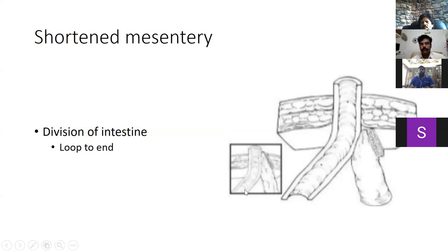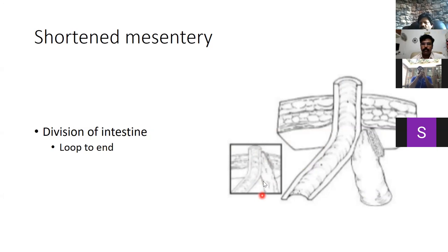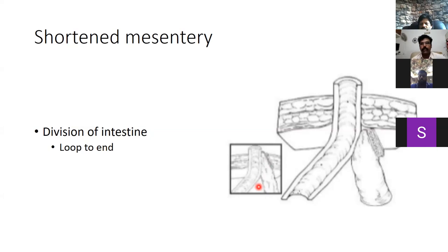If a loop was planned but the mesentery process prevents it, dividing the intestine and letting the distal limb drop into the intraperitoneal component while fashioning an end ileostomy can help mature a good stoma. This avoids further issues with stoma maturity that would occur with an inadequately mobilized loop.